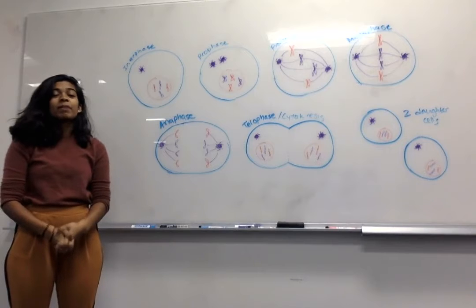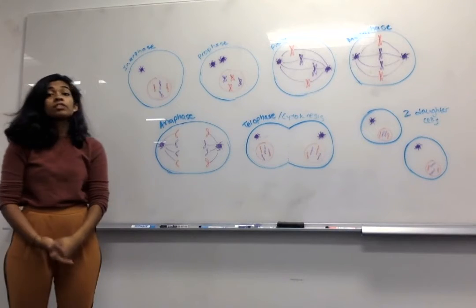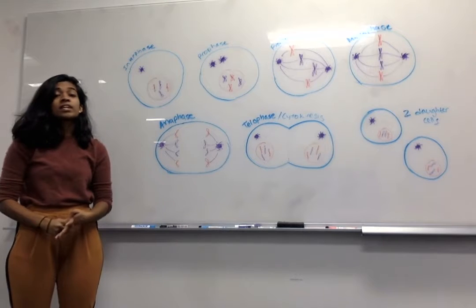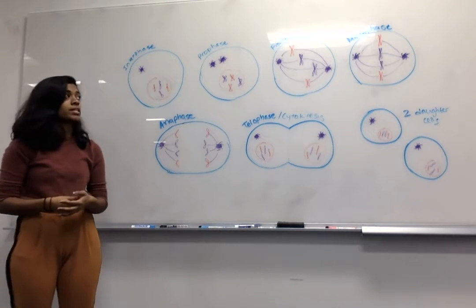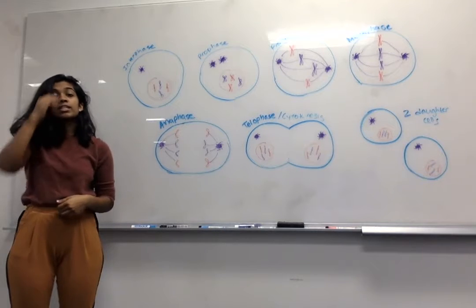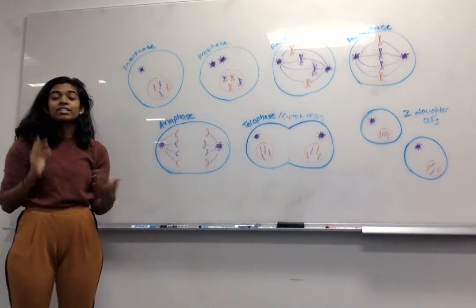Hi everyone, today we're going to talk about mitosis, which is a process of somatic cell division. As a reminder, somatic cells are any cells that aren't involved in the production of gametes. This type of cell division gives you two daughter cells with the exact same number of chromosomes as the parent cell.